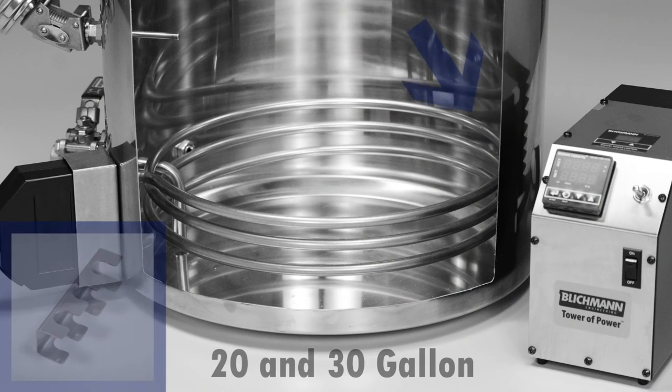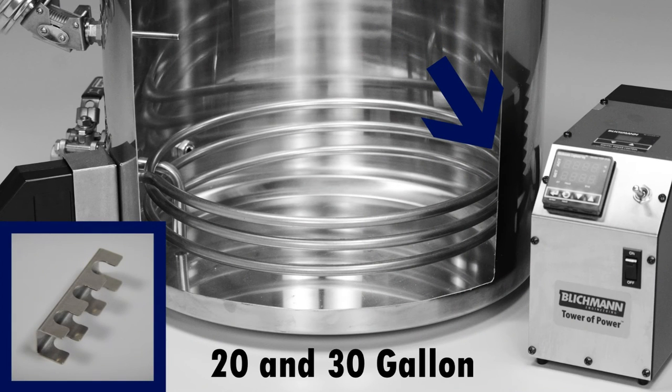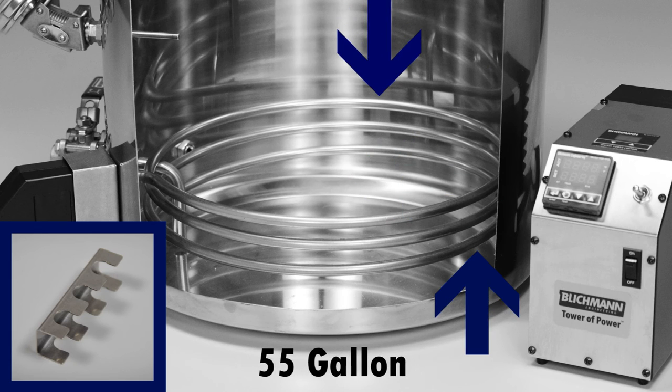For 20 and 30 gallon boil coils, install the coil spacer opposite the heater bulkheads. For 55 gallons, install the coil spacer approximately 120 degrees away from the heater bulkheads.